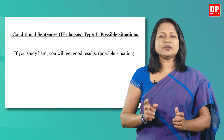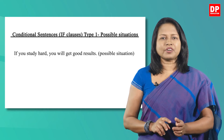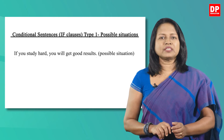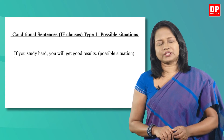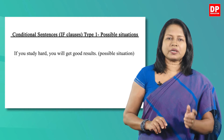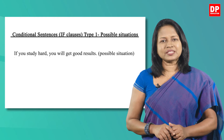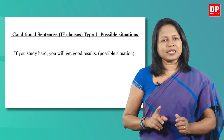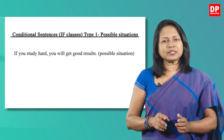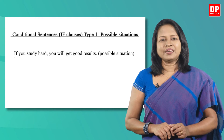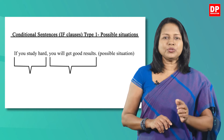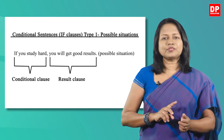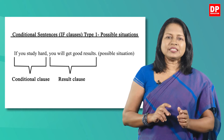Let's discuss type 1 of the conditional sentences in detail, as it is the focus of this lesson. Look at this example: 'If you study hard, you will get good results.' This type of conditional sentence describes possible situations. In other words, they talk about things which might happen in the future. Although we can't know exactly what will happen in the future, type 1 conditional sentences describe possible things which could easily come true. In this example, the condition is 'if you study hard', and if this condition is fulfilled, you can get good results.